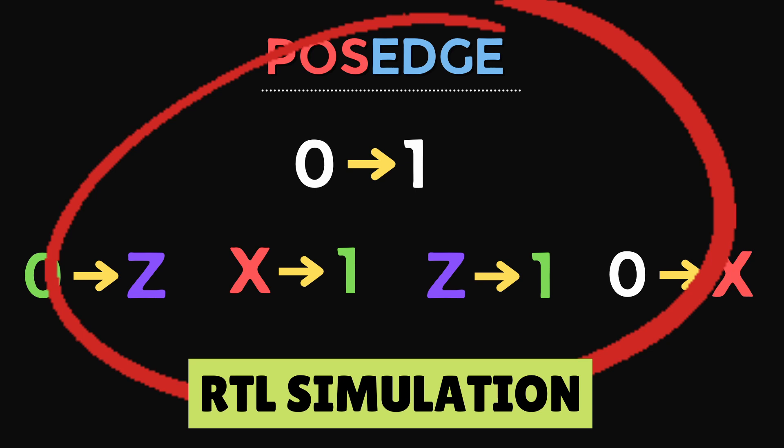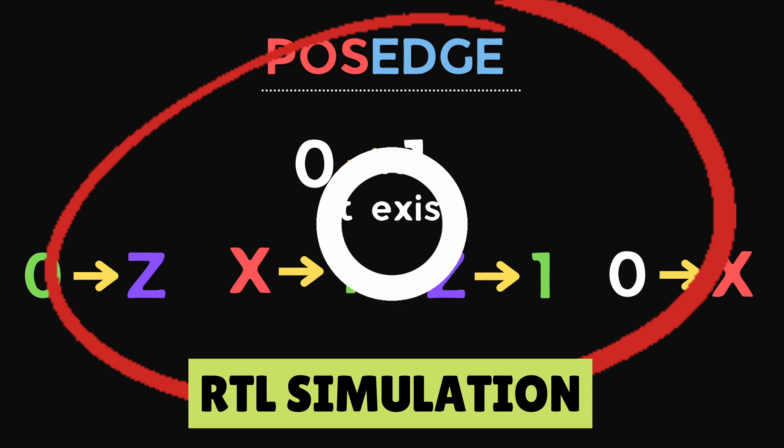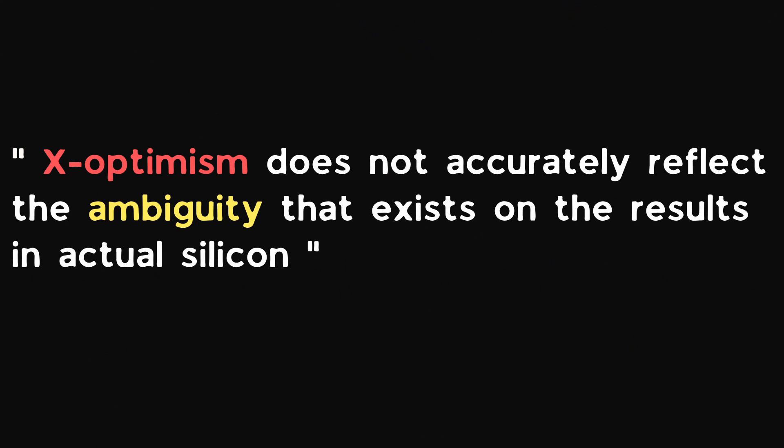In silicon, these transitions may or may not be a real positive edge transition, but in simulation, the simulator will behave as though a positive edge. X optimism not only hides the problem but it also does not behave like actual silicon.